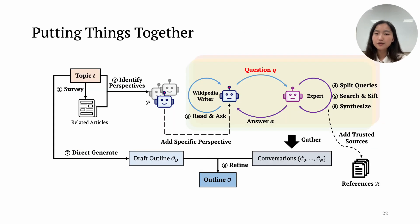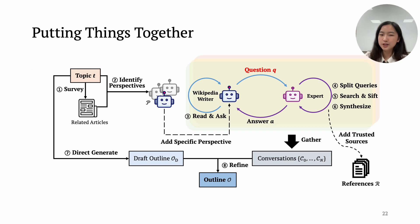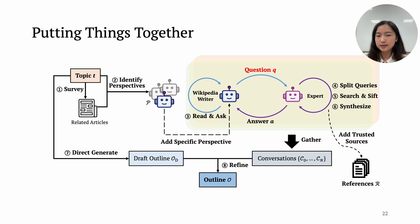Putting things together, starting from the topic alone, STORM surveys relevant topics and identifies a set of perspectives for researching T. For each perspective, we use it to prompt the language model to come up with questions and use a retrieval question-answering module to find documents to include in R and provide answers to continue the conversation. Some of the questions can run in parallel. Then we create the outline by first prompting the language model to directly generate one to explore its parametric knowledge, and refine it with the information-seeking conversations. The final article can be written in a section-by-section fashion.